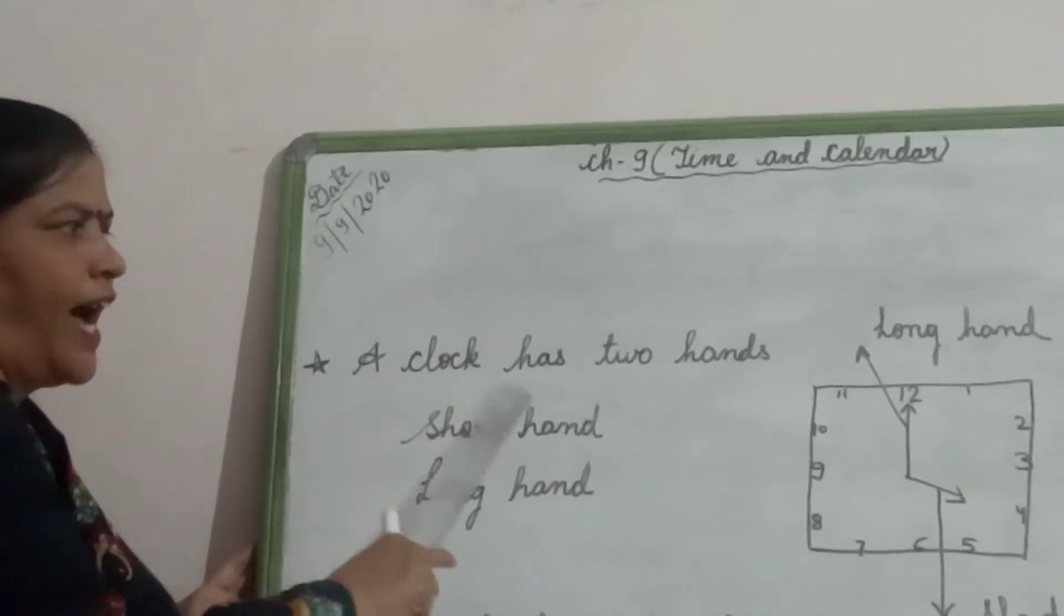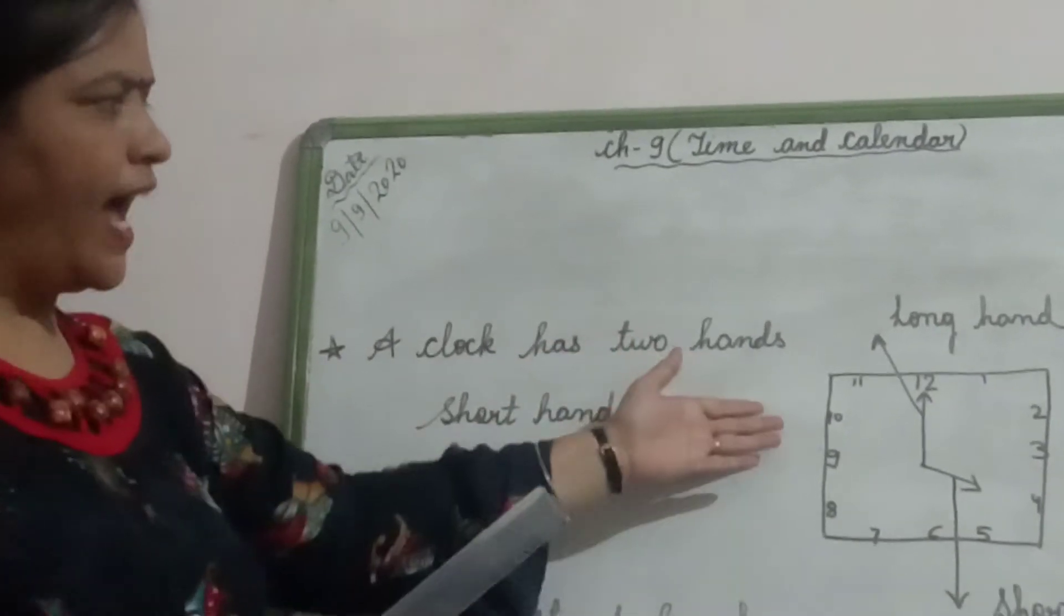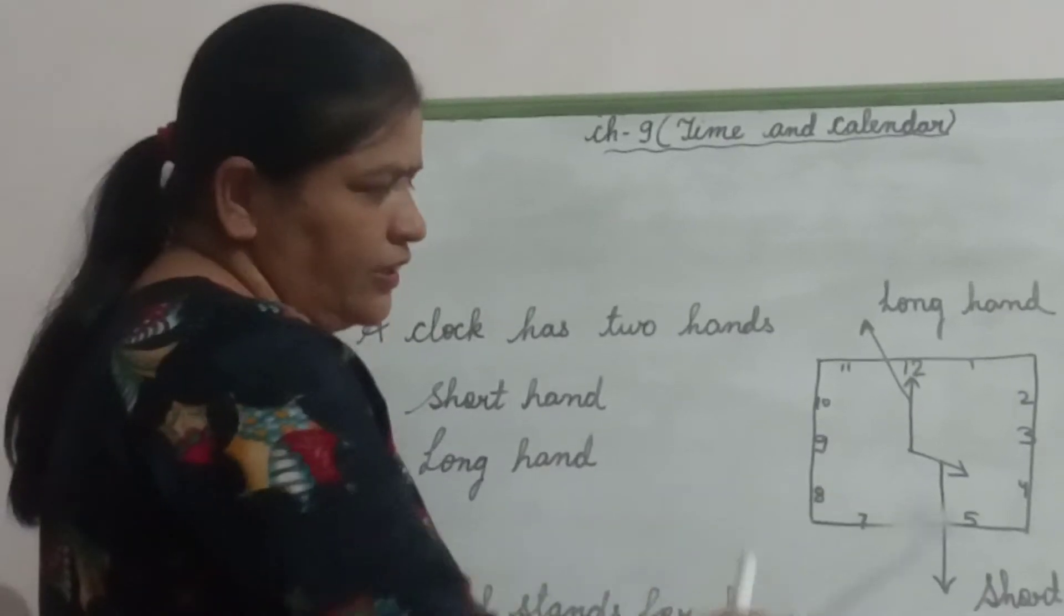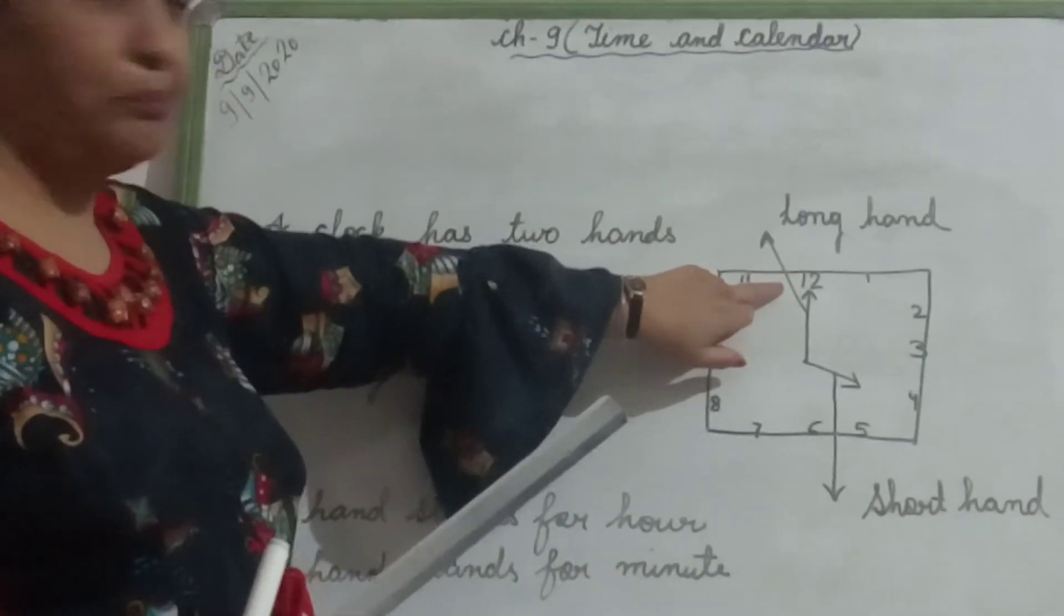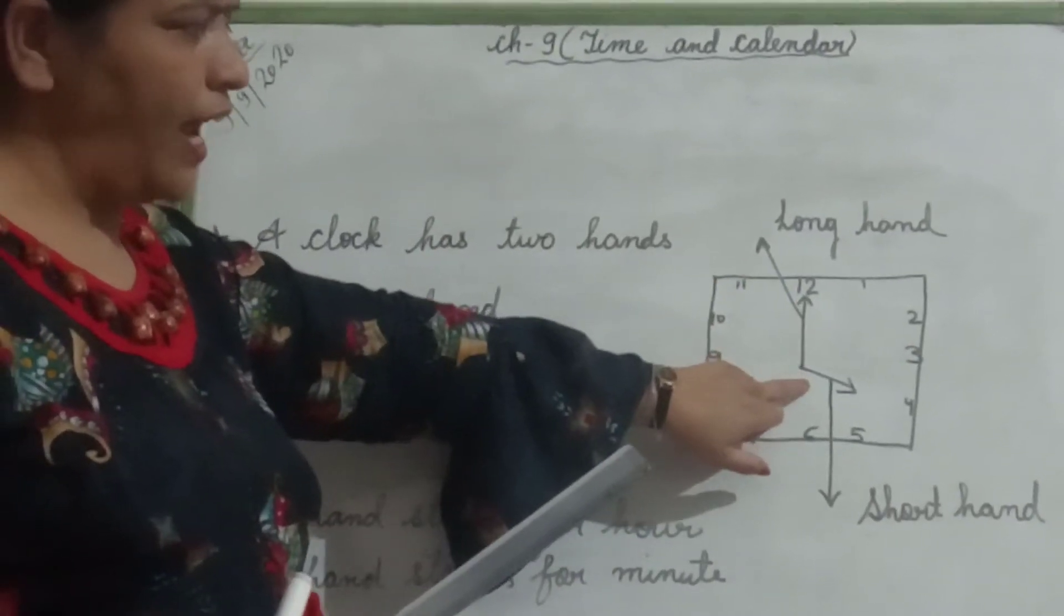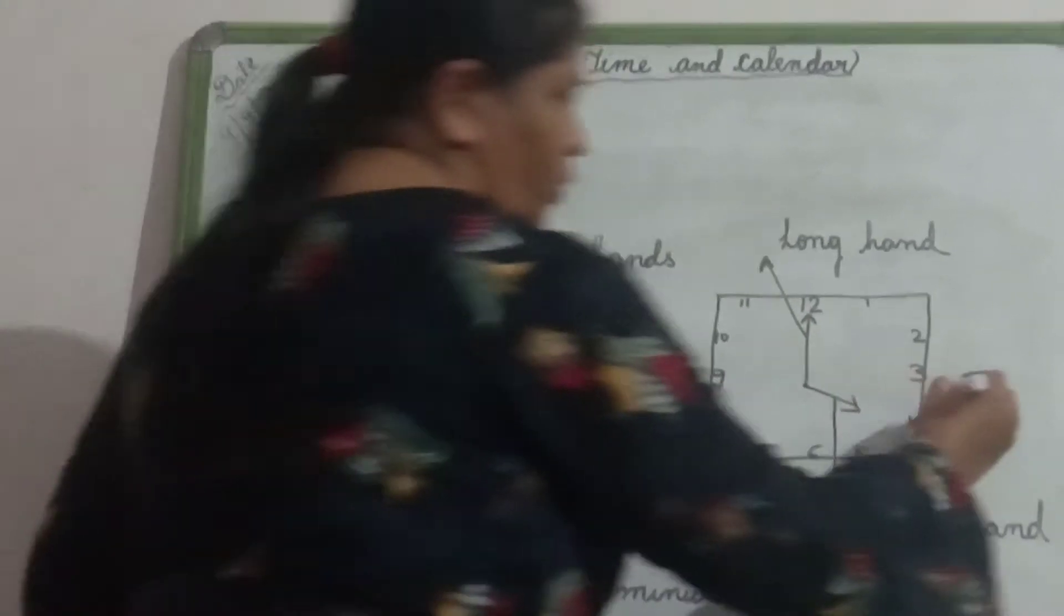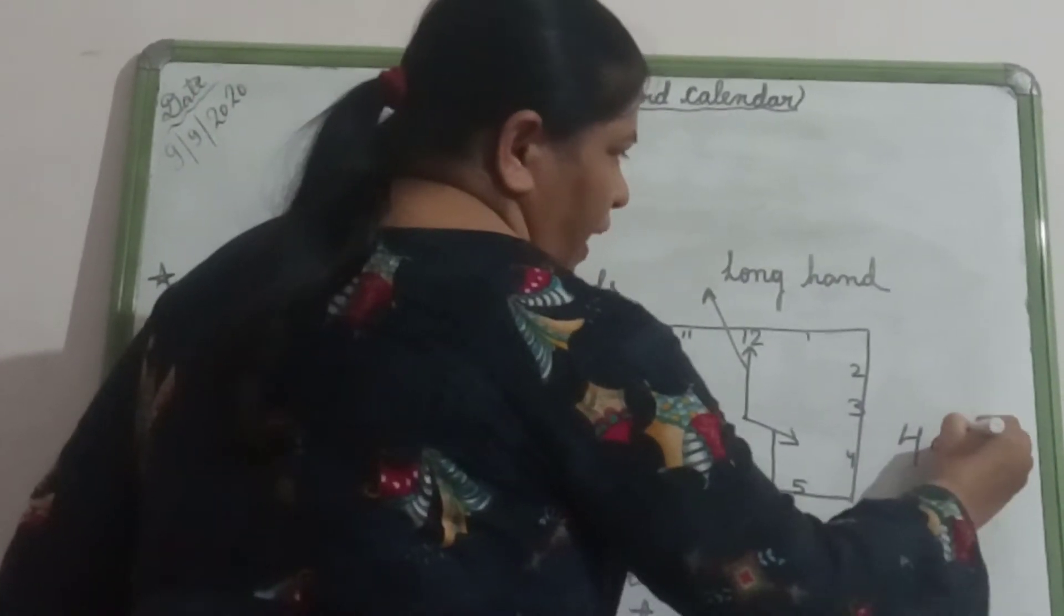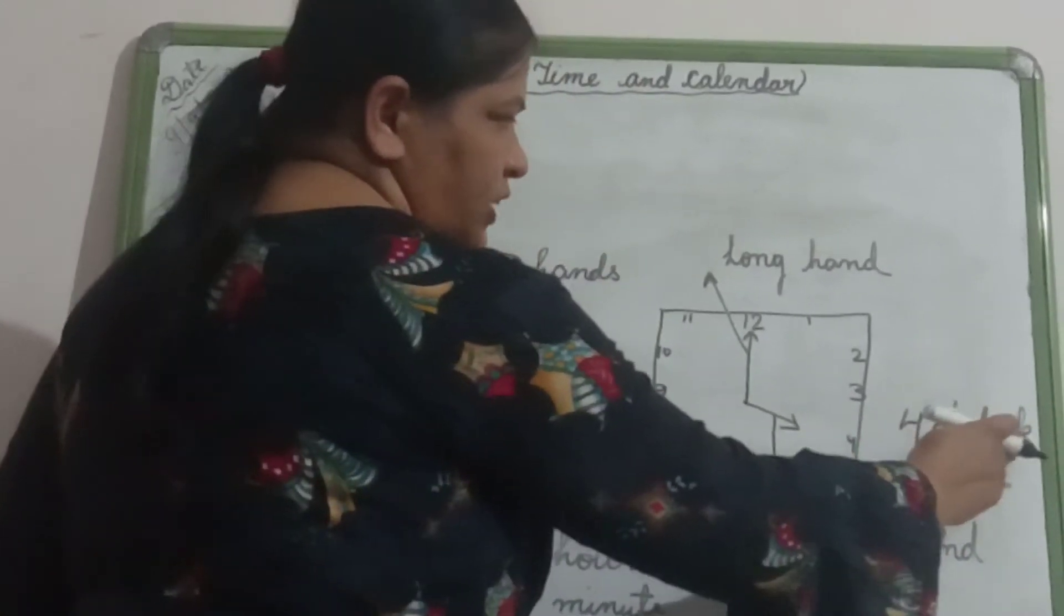A clock has two hands, short hand and long hand. Children, as you see, there is a picture of a clock. This shows short hand and this arrow shows long hand. See, the long hand is at number 12 and the short hand is at number 4. Children, then the time will be 4 o'clock. We will write 4, 0, comma and the spelling of clock that is C-L-O-C-K clock.